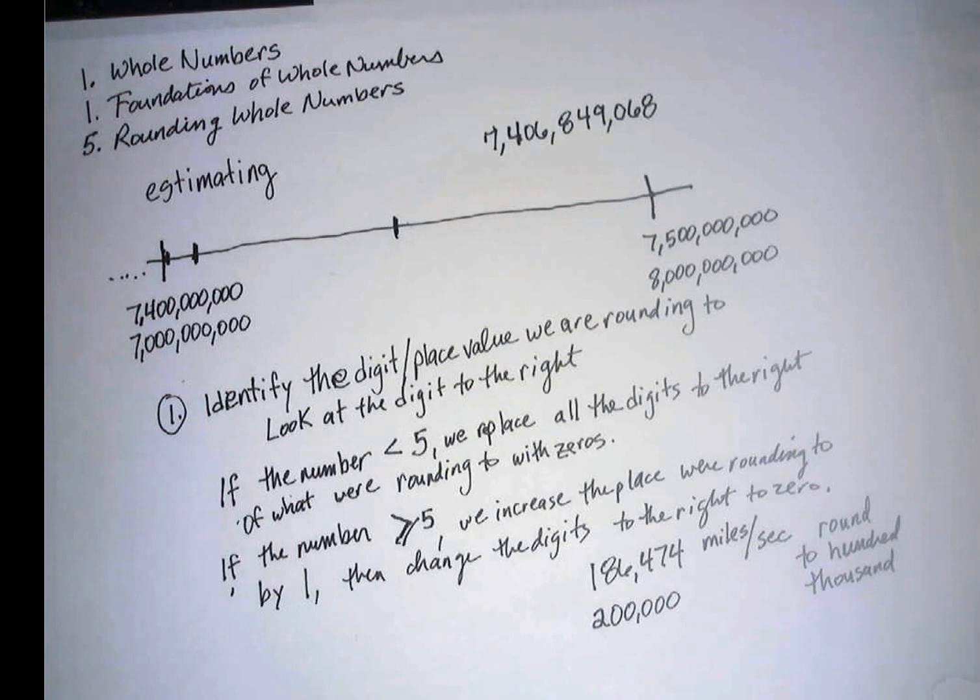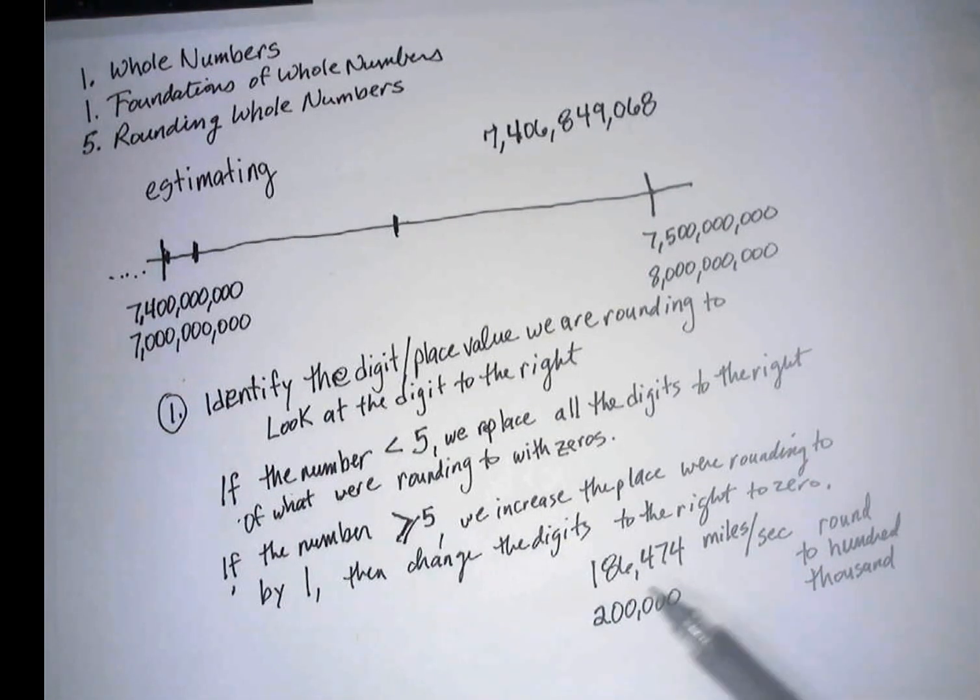And just for the record, this is not the speed of light exactly. It is right around 186,000 miles per second, but I just threw these digits out there for the purpose of this video. Okay, so that's going to do it for rounding whole numbers. We will see you in the next video, which will be some exercises rounding numbers. Thanks for watching, and we'll see you soon.